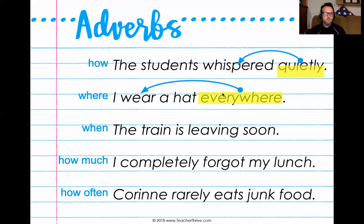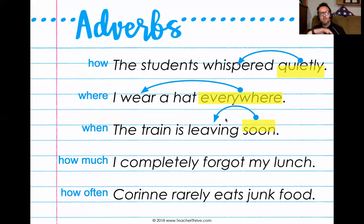Adverbs can also tell when. For example: 'The train is leaving soon.' What is the train doing? It is leaving. When is it doing that? Soon. We don't know the exact time — it might be in 20 minutes, 35 minutes, or next week — but the adverb tells us when that action is happening. When's the train leaving? Soon.